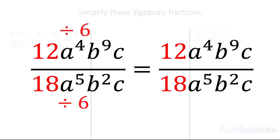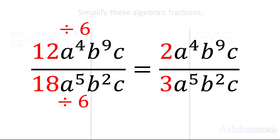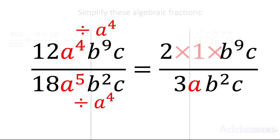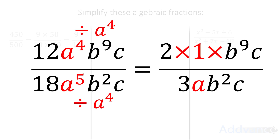For 12 over 18, we divide the top and bottom by 6 — that's the biggest number that divides both 12 and 18. 12 divided by 6 is 2, and 18 divided by 6 is 3. Now the a's: the biggest thing that can divide a to the power 4 and a to the power 5 is a to the power 4. So a⁴ divided by a⁴ is 1, and a⁵ divided by a⁴ is a.